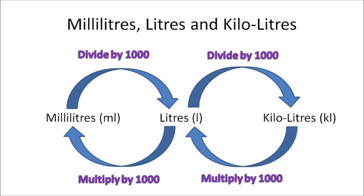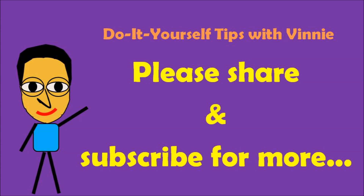Just to recap: to convert milliliters to liters, divide by 1000. To convert liters to kiloliters, divide by 1000. To convert kiloliters to liters, multiply by 1000. To convert liters to milliliters, multiply by 1000. Thank you very much for watching — please share and subscribe for more on the channel.